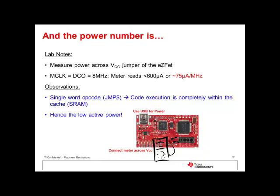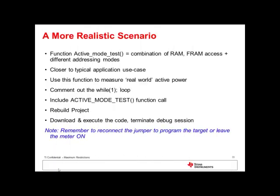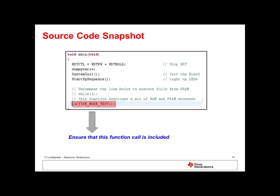In the next lab, we will use a more typical real-world use case to measure power. In this lab, we will replace the while(1) statement with a function called active_mode_test that executes a mix of CPU instructions in an infinite loop. These instructions use different addressing modes and registers and exercise both SRAM and FRAM. The instructions to build and download the code to the board are the same as in the previous lab. Remember to open the source code in the editor window and comment out the while(1) loop, but include the active_mode_test.